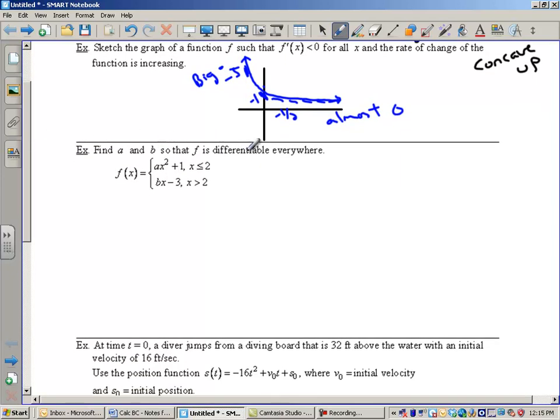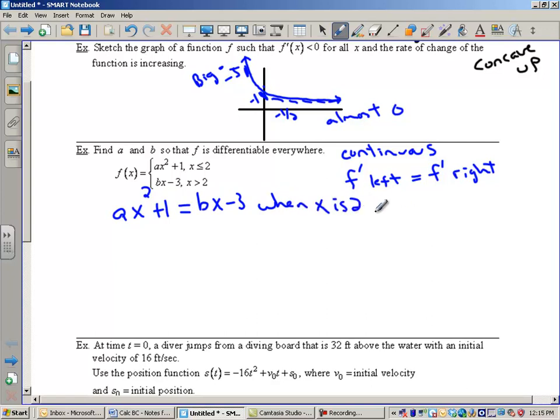Let's do another one. Find a and b so that f is differentiable everywhere. This means two things. First of all, it must be continuous. And on top of that, the slopes have to match. The derivative from the left has to equal the derivative from the right. So let's write down a couple of equations. First of all, for continuity, we need ax squared plus 1 to equal bx minus 3 when x is 2. So that's going to lead me to the equation 4a plus 1 equals 2b minus 3. And since that's one equation and two variables, that's not enough to solve, but I need another statement. I need the derivatives to match.